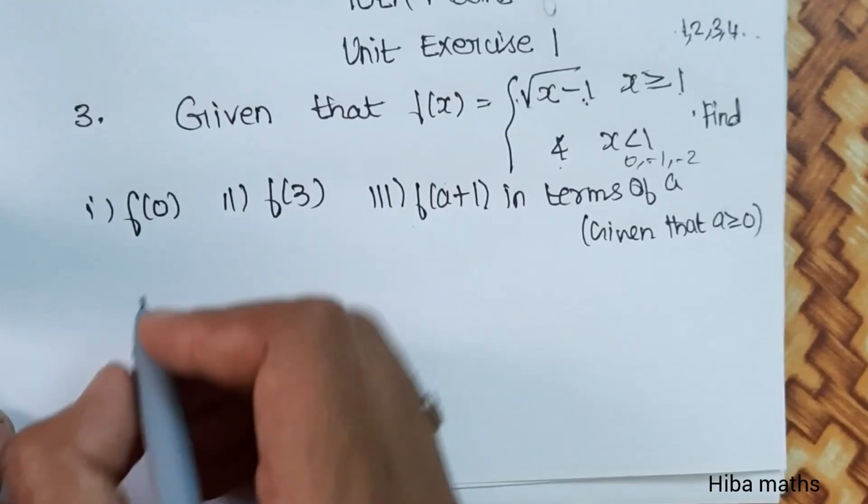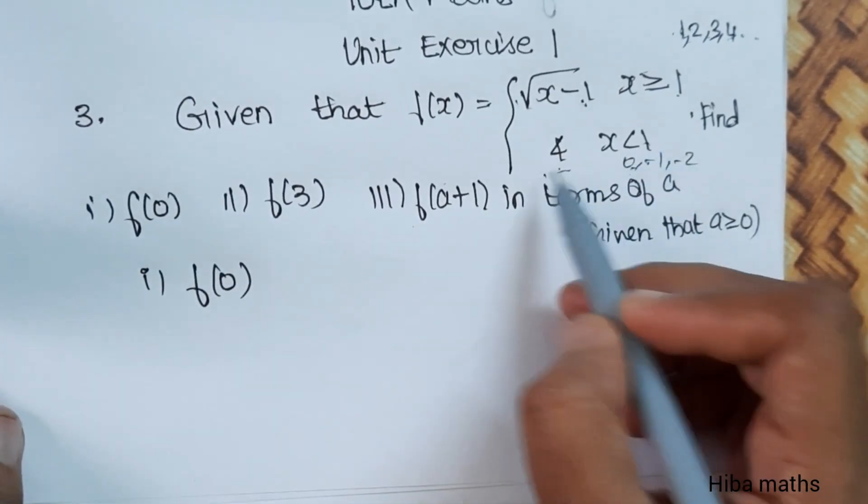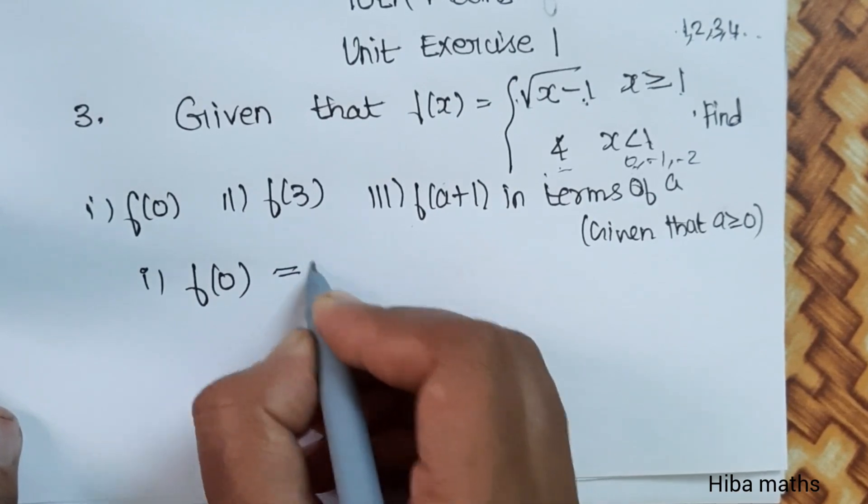f(0). Since 0 is less than 1, the answer is 4 directly.